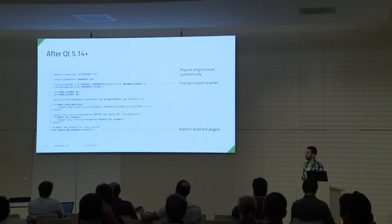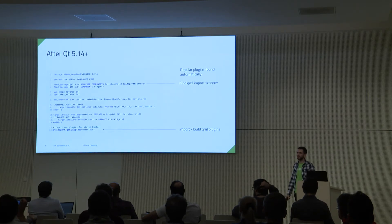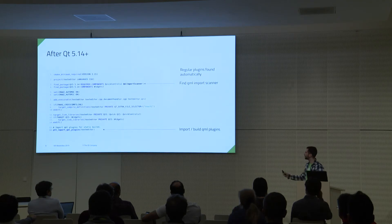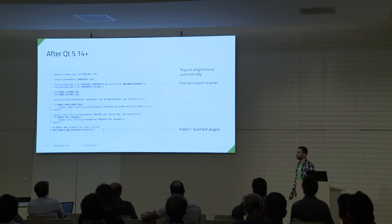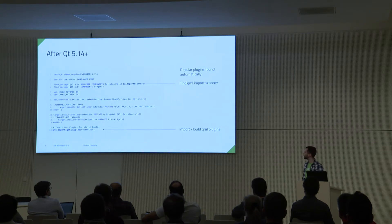This is how it looks in Qt 5.14 and above. You need just two changes. You need to add: I want to find a package called Qt QML import scanner, and at the bottom you say import QML plugins — done. What this takes care of behind the scenes: it runs the QML import scanner executable, generates the files it needs, and links them. You don't need to specify all the manual stuff you had to do before. And for the regular plugins which are not QML, you don't need to do anything — the default set which Qmake usually links in is just going to be linked in by default.